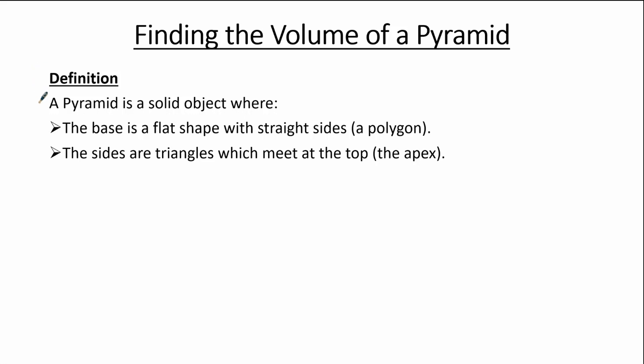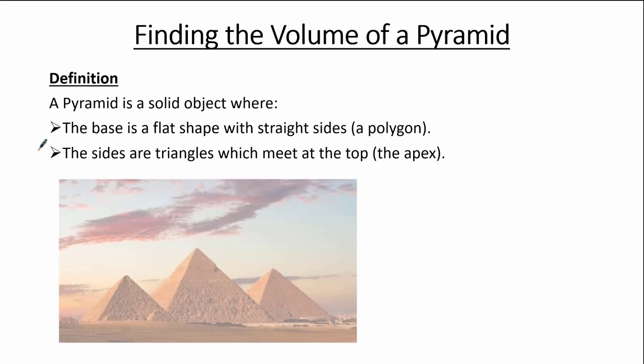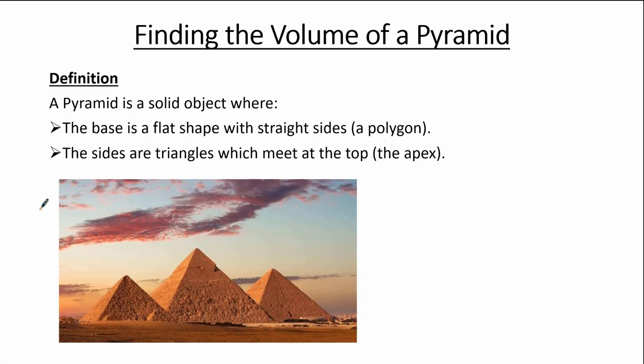A pyramid is a solid object where the base is a flat shape with straight sides, therefore the base of a pyramid is a polygon, and the sides are triangles which meet at the top — we call the top the apex. In the real world, a very famous example of pyramids are the pyramids of Giza in Egypt.